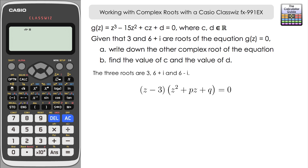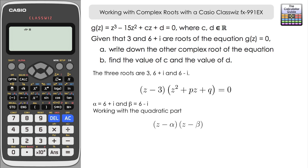We'll set up a factorised form of the quadratic. It's typical to use alpha and beta for the complex roots, so we assign alpha equals 6 plus i and beta equals 6 minus i. In factorised form, the quadratic is Z minus alpha times Z minus beta, and it's that notation that will help us discover the values of P and Q.